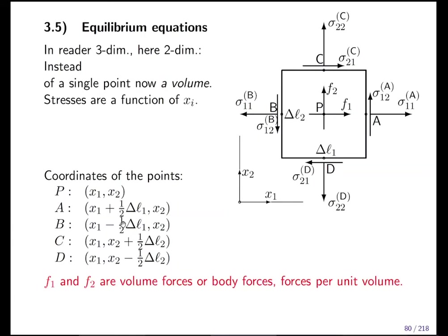Point P is in the center of the cube at position x1, x2. Point A is at the right end of the cube, where we go Δl1/2 to the right — Δl1 is the side length of the cube. From the center to point A it's half Δl1; from the center to point C it's half Δl2. The cube has side lengths Δl1, Δl2, and Δl3 out of the plane. We will need Δl3 as well.